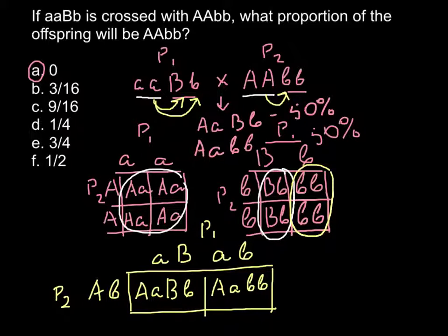Once again, the ratio would be 1 to 1 or 50 to 50%, so the same results as we got here. And the same answer A. There is no possibility that we are going to get AA for the progeny when we cross these two parents.